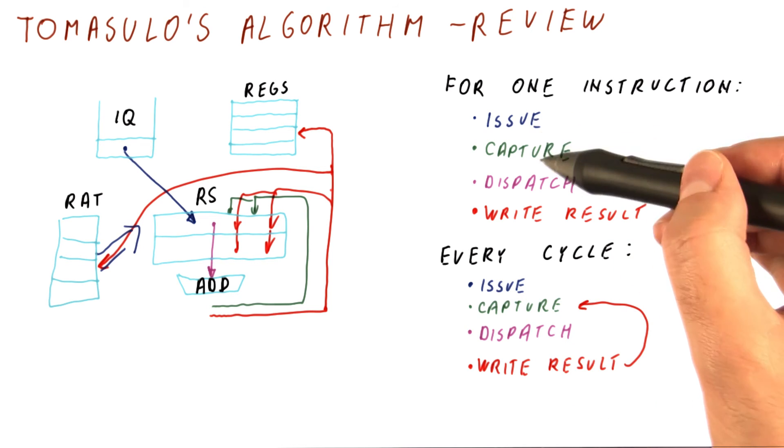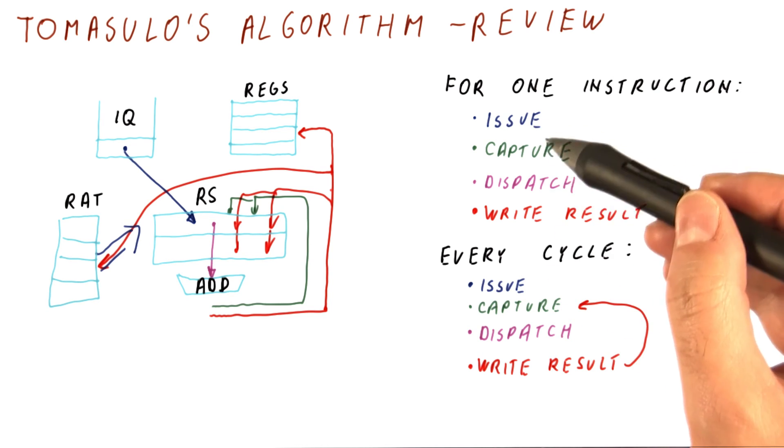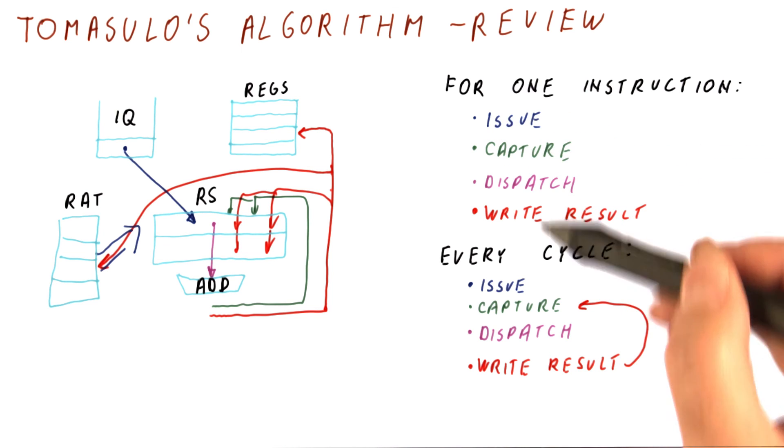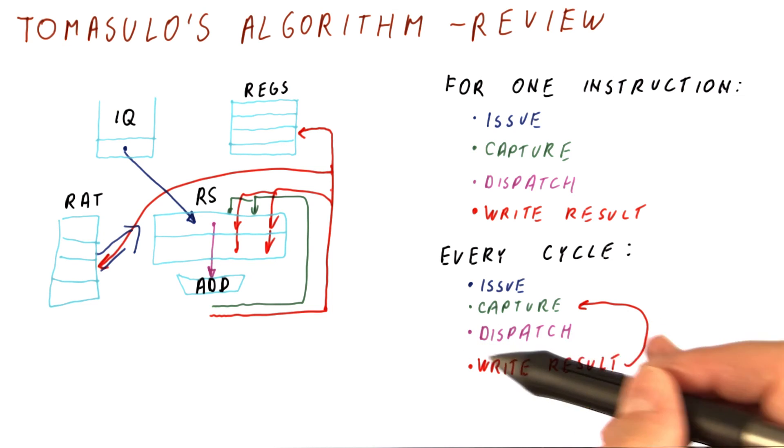So you can look at each of these steps as needing to be taken by a particular instruction. But the processor doesn't do just an issue of an instruction in a cycle. It's doing the issue for that instruction while trying to capture for others, while trying to dispatch another, while doing the write result for yet another instruction.